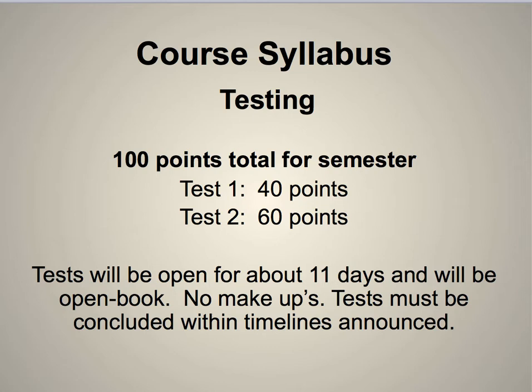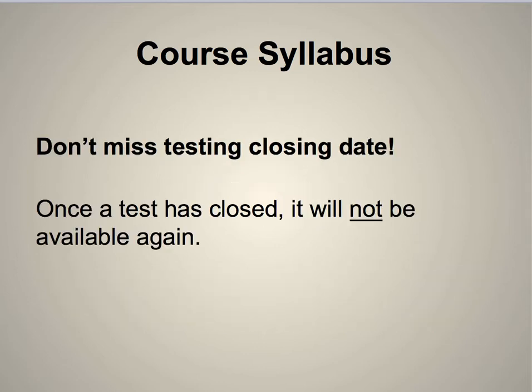Each student gets different test questions because Blackboard draws from a whole pool, so everyone gets a separate set of questions. You're on the honor system — do your own work. Once the test has closed, it's closed, so you have to take it during that 11-day period. If you miss it, you'll really have to rely on extra credit points to make up for what you've missed.